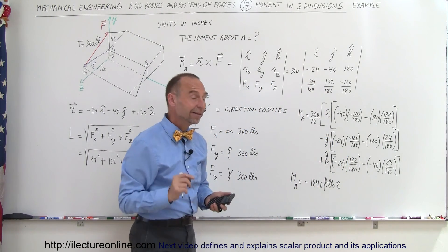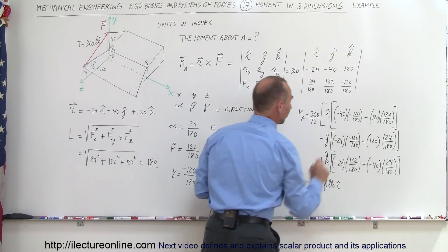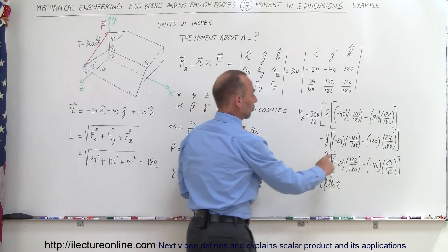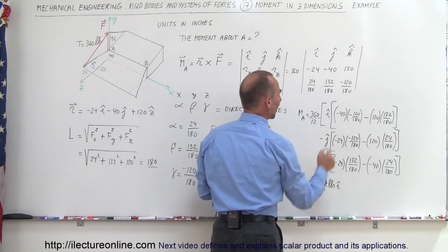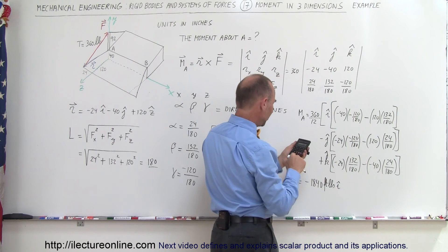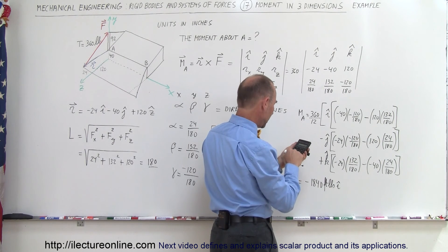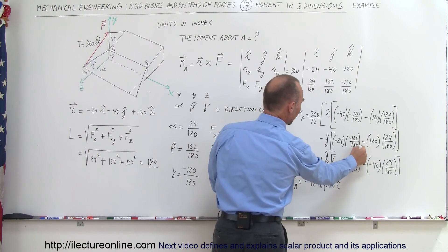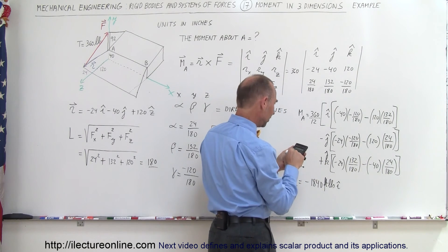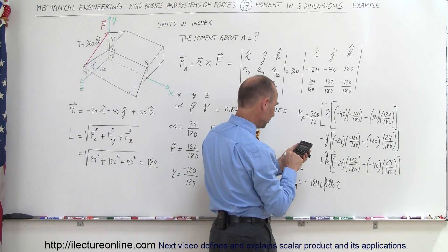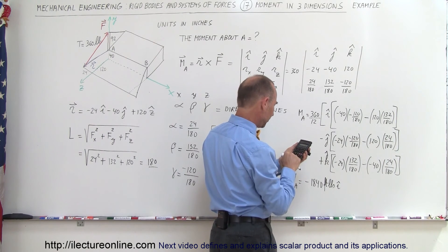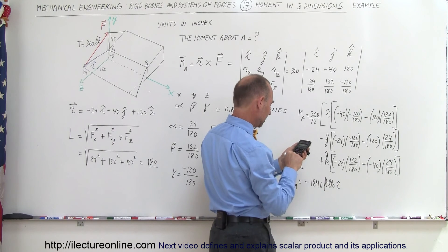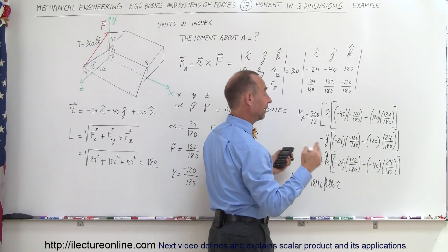For the J component: minus times minus gives positive 24 times 120 over 180, minus 120 times 24 over 180 — those are equal and opposite, so the result is zero. The J component is plus zero J.